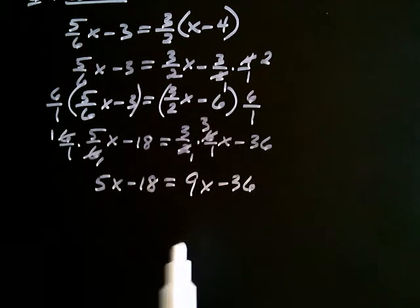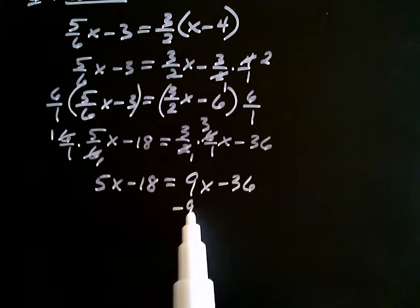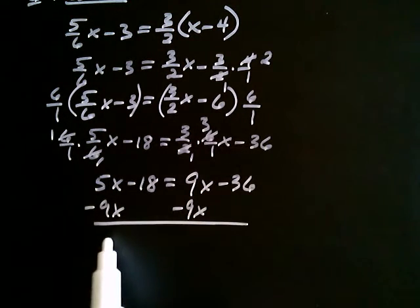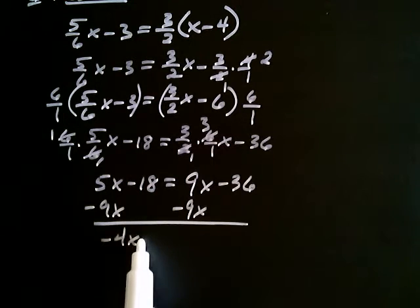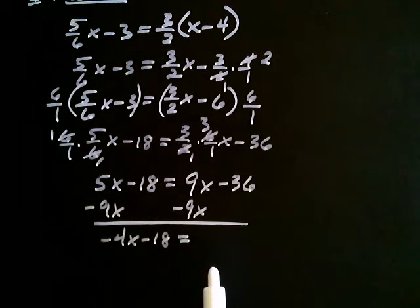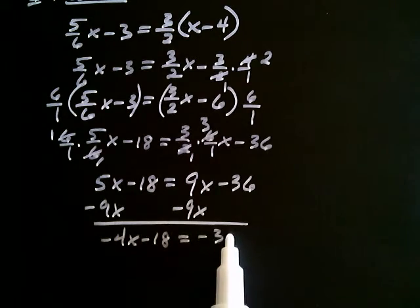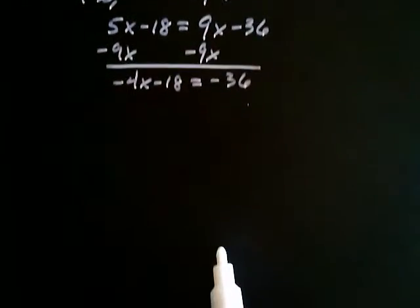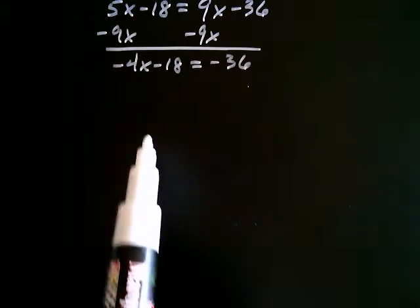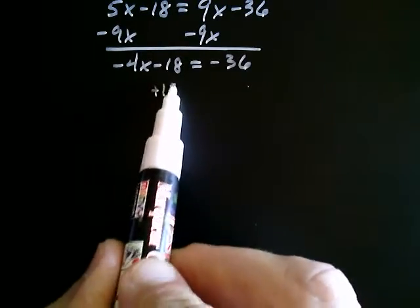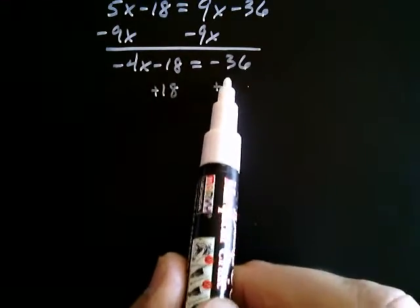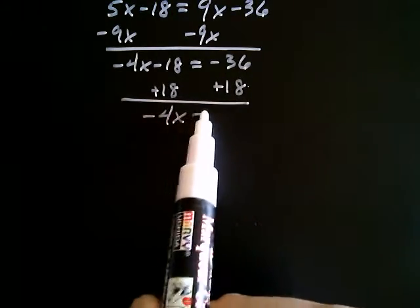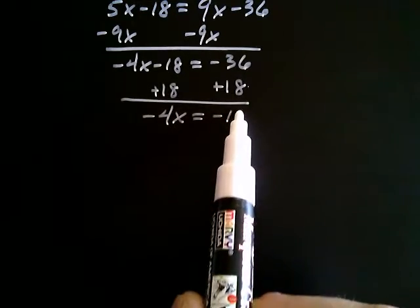So trying to get x on one side, let's subtract 9x from both sides. I get negative 4x minus 18 equals negative 36. And now I'm going to add 18 to both sides. The left-hand side becomes negative 4x, and on the right-hand side it's just negative 18.